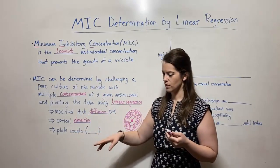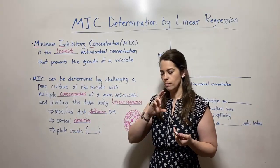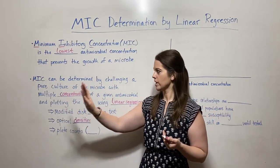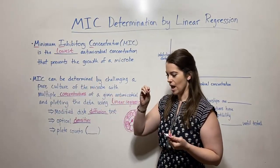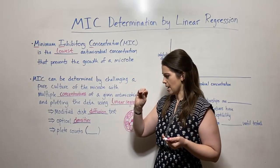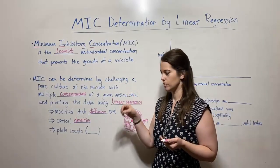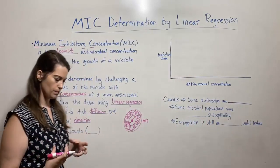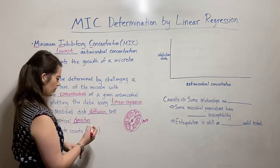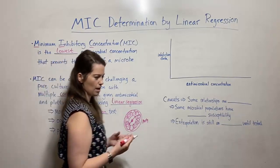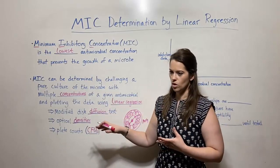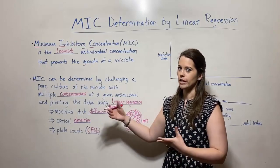Another type of data you can use is plate counts. This is where you have, say, 10 tubes with the microbe in them, and each of the 10 tubes is testing a different concentration of the given antimicrobial compound. At the end of 24 hours — however long it takes the bacterium to get well into the exponential growth phase — you take maybe a milliliter from the tubes and do a plate count. That's where you put the bacteria onto a regular plate and count the colony forming units to estimate bacterial growth. These are the three major ways to determine how inhibitory different concentrations are.